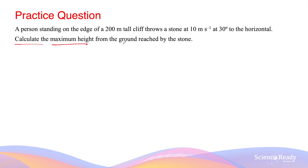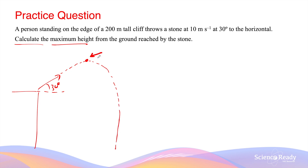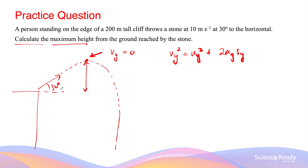For the same scenario, calculate the maximum height from the ground reached by the stone. When an object is launched at 30 degrees to the horizontal, it reaches a maximum height before coming back down. At the maximum height, it is very important to remember that the vertical velocity vy equals 0. We can use the equation vy² = uy² + 2·ay·sy to calculate the vertical displacement — the height reached above the initial starting point.